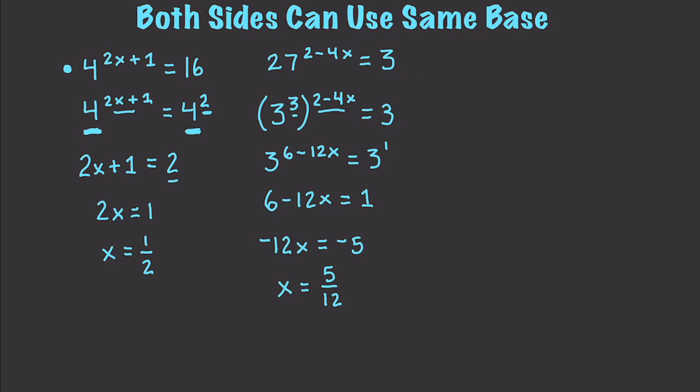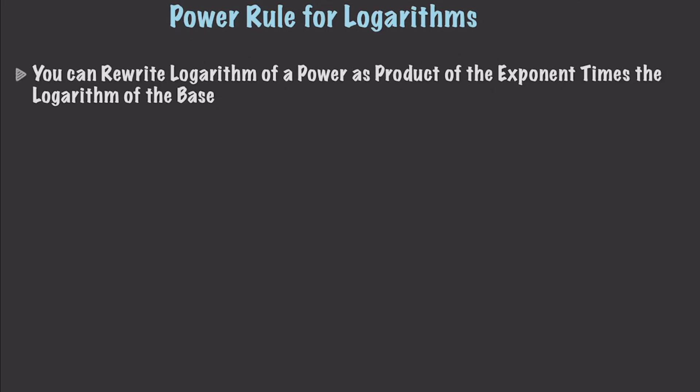Next, I want to talk about the power rule for logarithms. It sounds extremely complicated, but once you see it, it's not. Basically, the power rule for logarithms tells us you can rewrite the logarithm of a power as the product of the exponent times the logarithm of the base. So if you have log base b of m to the power of n, this equals n times log base b of m.